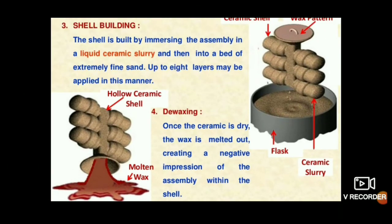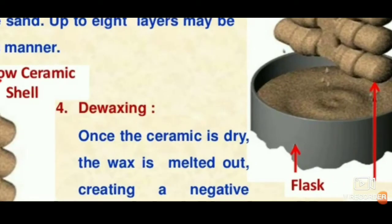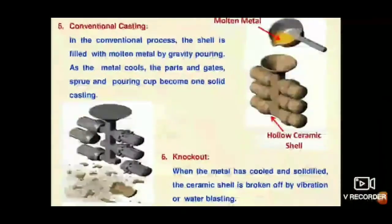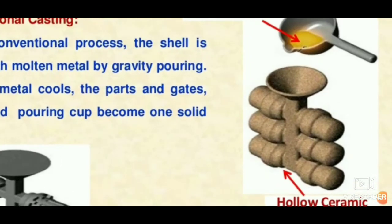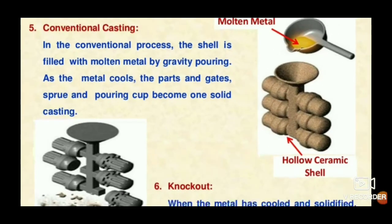Then conventional casting is performed. The molten metal is poured in through the sprue, and it flows inside through the internal surfaces of the ceramic shell and fills up the cavity completely.